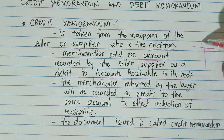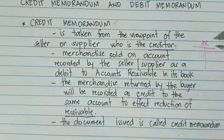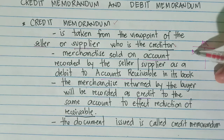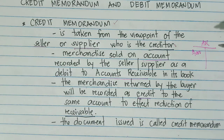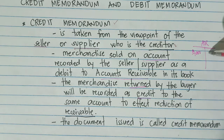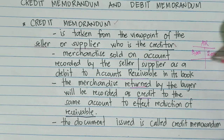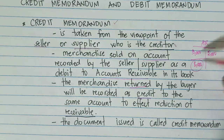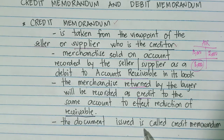The seller or supplier has accounts receivable on their book. If the merchandise is sold on account, there is a debit to accounts receivable — for example, 10,000. Then, if the buyer returns merchandise worth 2,000, the same account will be credited to effect the reduction of receivable, leaving 8,000 as the remaining receivable.